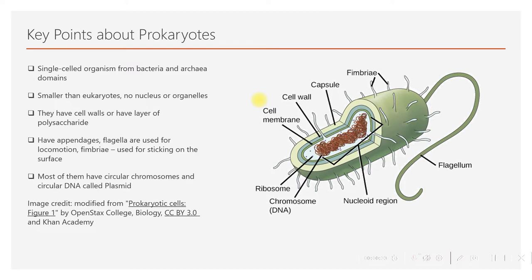However, they have a cell wall and a layer of polysaccharide. One of the striking things about these cells is that they have appendages — projecting parts. Like many invertebrates, they have a flagellum used for locomotion, which propels the bacterium forward.